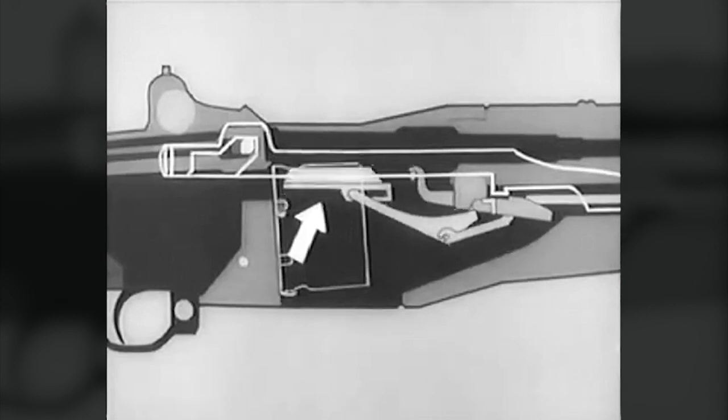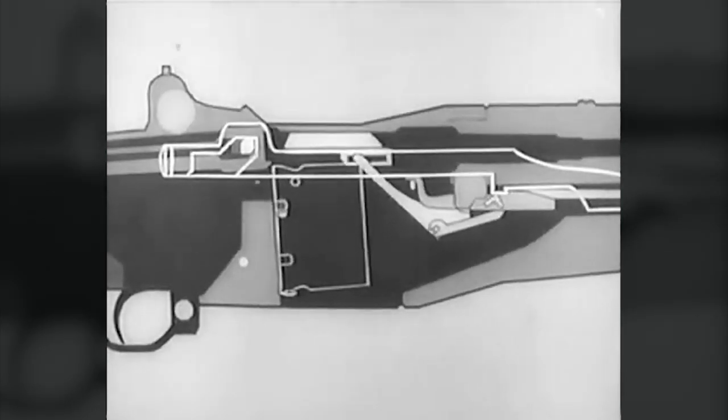Let's repeat this action again. The follower goes up. The operating rod catch is cammed up and catches the operating rod. The latch releases the clip and it's kicked out of the receiver.